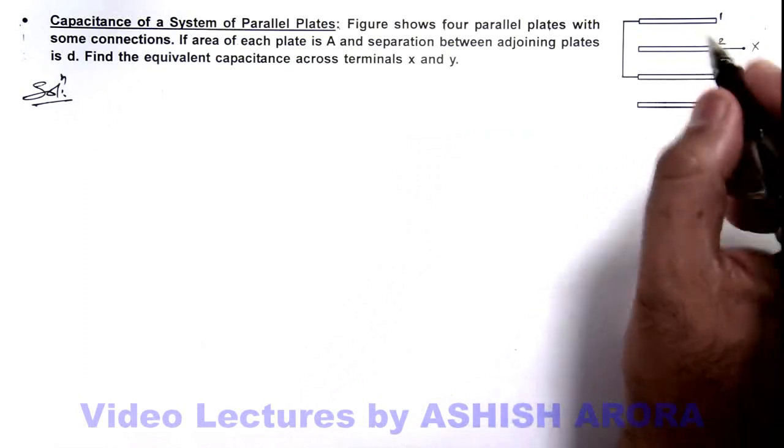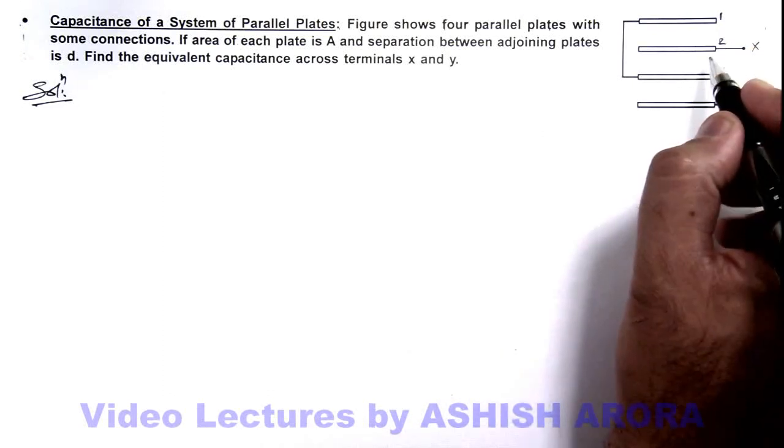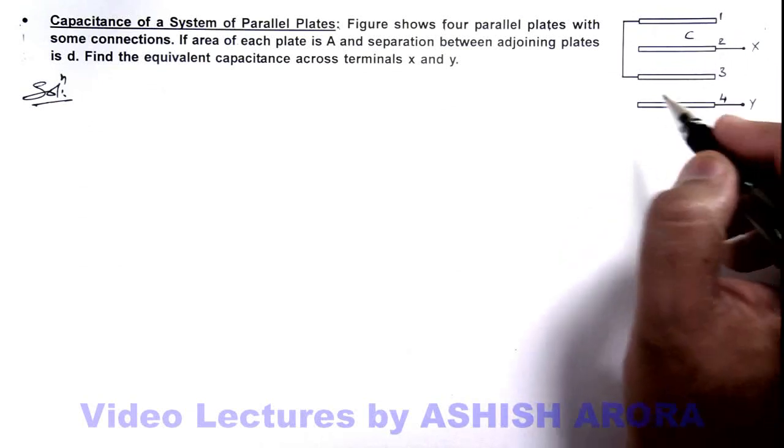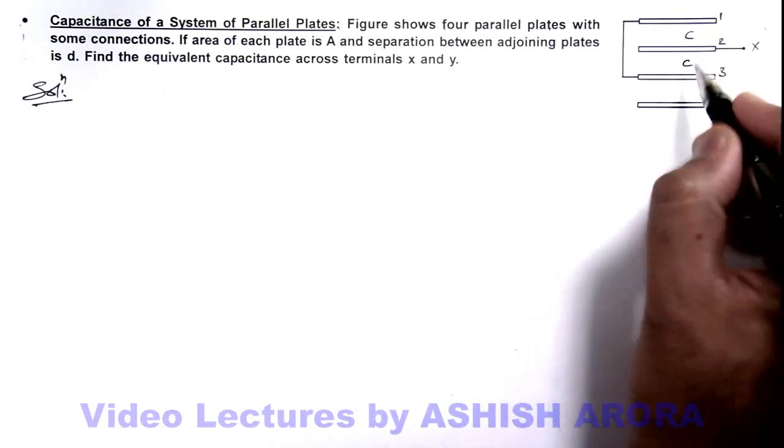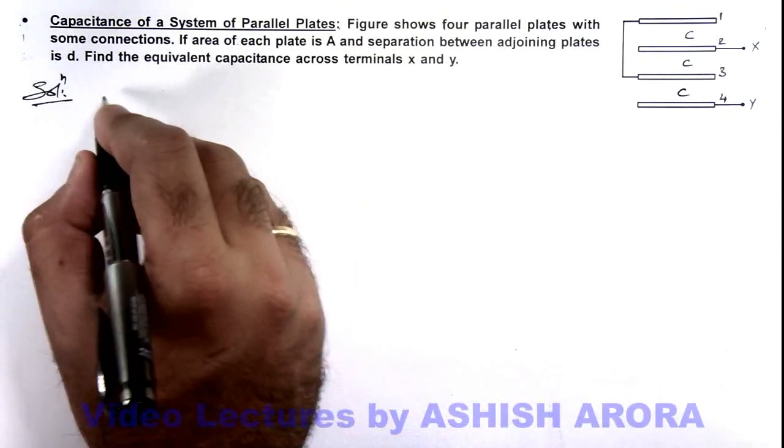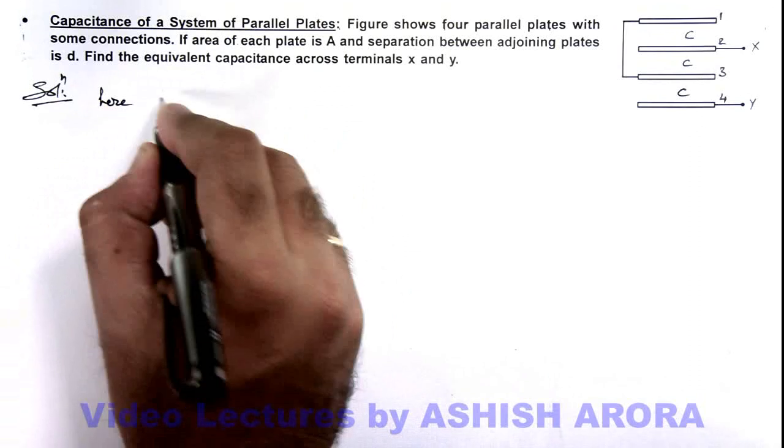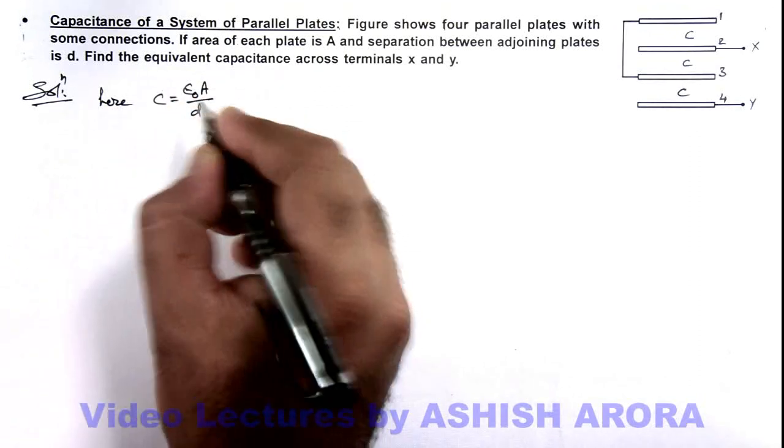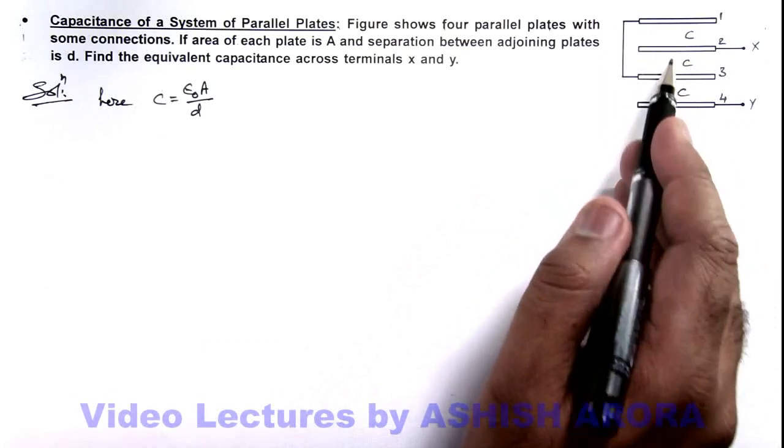Between each adjoining plate, each of the pair of adjoining plates, there'll be a capacitance. Say we can write it as c, this is also c, this is also c. The value of c is epsilon not A by d, as the plate area is A and d is the separation between the plates.